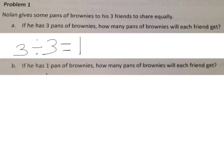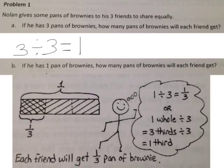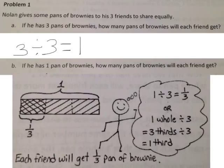Part B says that Nolan has some pans of brownies for his three friends to share equally. If he has one pan of brownies, how many pans of brownies will each friend get? We'll use our tape diagram and show that we have one pan of brownies and three friends to share equally. So we'll have one divided into three parts. Each friend will get one-third pan of brownies. One divided by three equals one-third: one whole divided by three is three-thirds divided by three, and that's one-third.